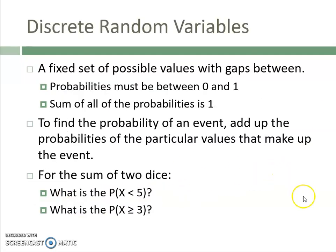We're going to talk a lot about discrete random variables in the first part of this video, then continuous later. A discrete random variable has a fixed set of possible values with gaps in between. The probabilities always have to be between zero and one, and the sum of all the probabilities is always one. To find the probability of an event, you add up the probabilities of the particular values that make up the event.